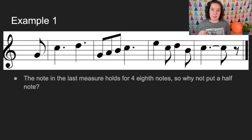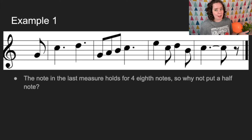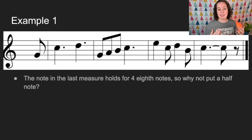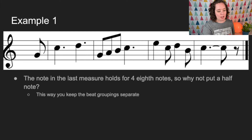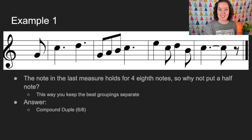Looking at the last measure, there's a dotted quarter tied to an eighth note — a total of four eighth notes. You might ask why not just use a half note. In simple meter a half note would work, but they chose a dotted quarter tied to an eighth note to keep the beat groupings separate. So the answer is compound duple, or more specifically six-eight time.